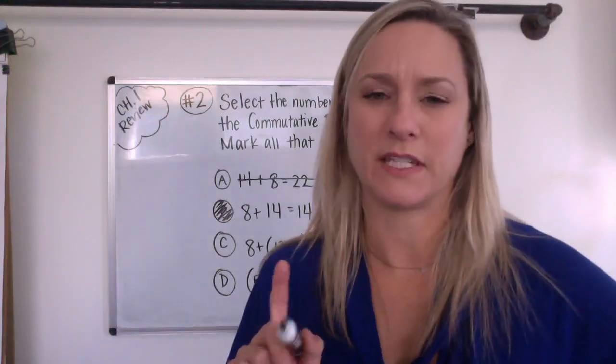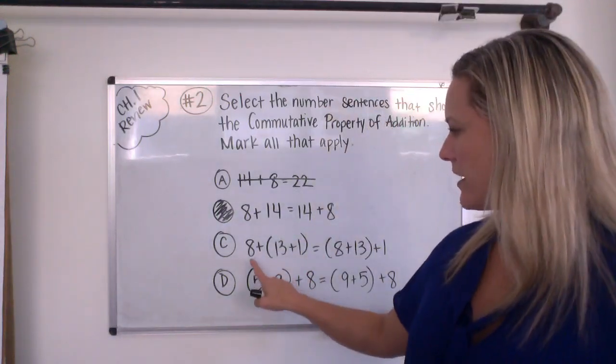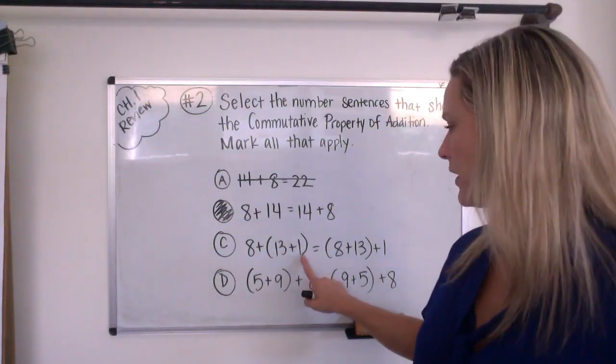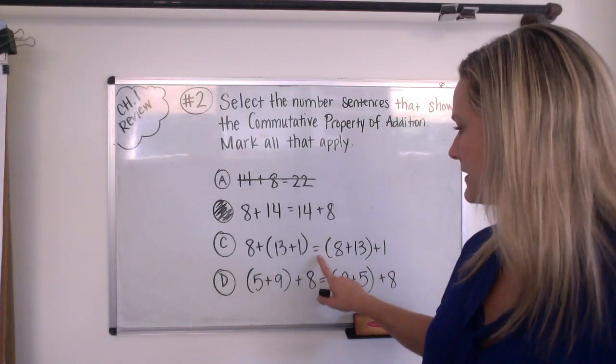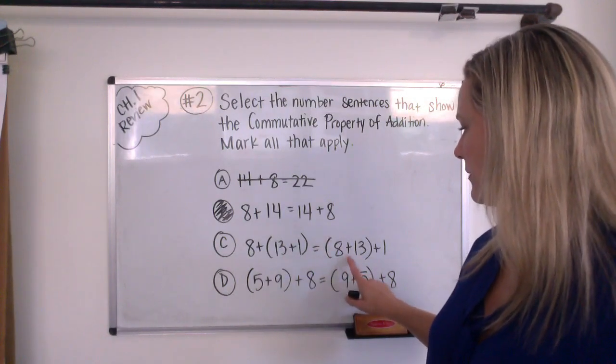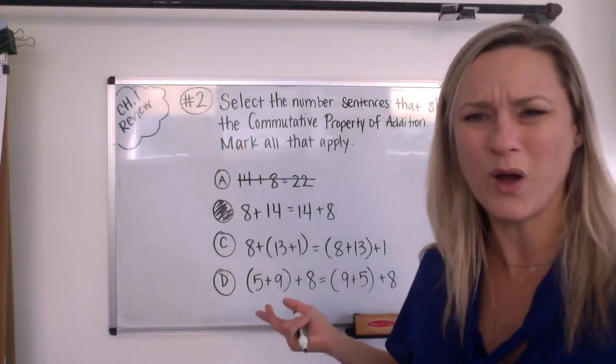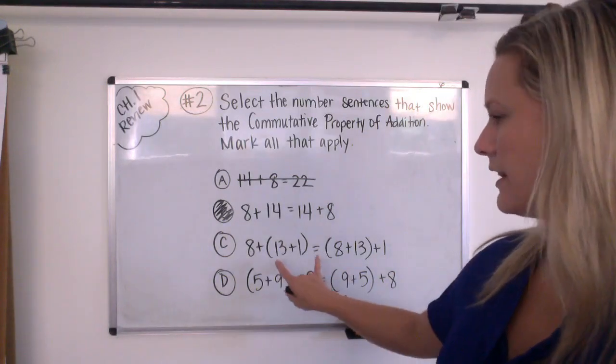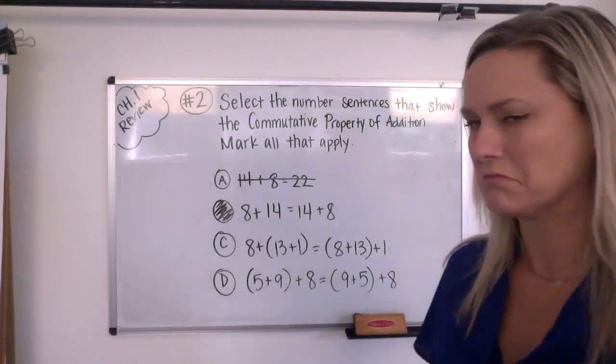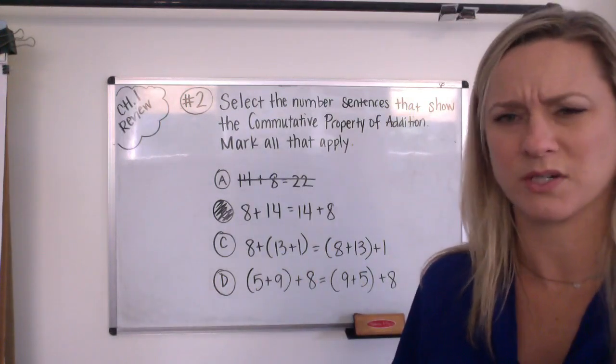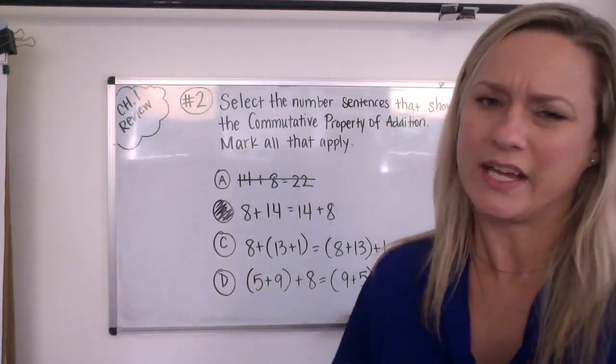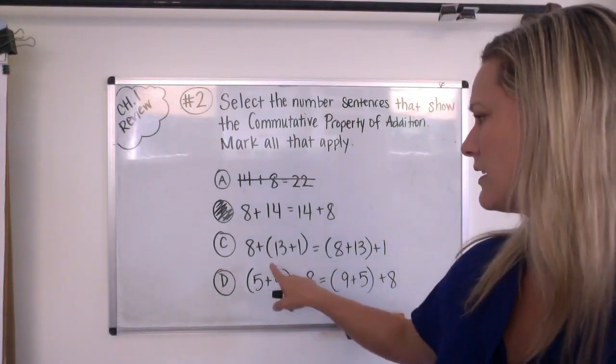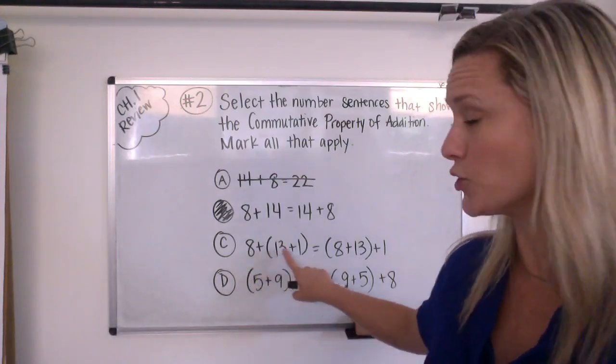So 8 and 14 swap spots, so that means that is part of the commutative property of addition. But it says mark all that apply, so I have to keep going. All right, so now we have 8 plus in parentheses 13 plus 1 is the same as in parentheses 8 plus 13, close parentheses, plus 1. Okay, so let's check. They moved the parentheses, but did the numbers move? Just the parentheses moved, the numbers stayed in the same spot.